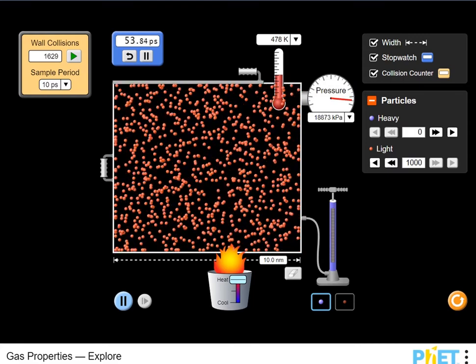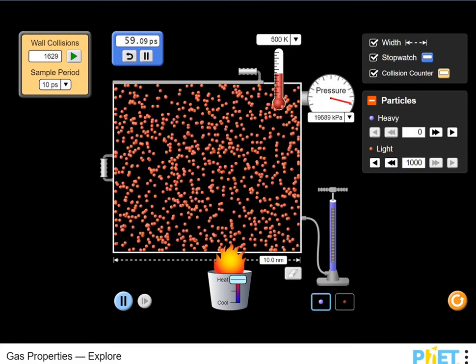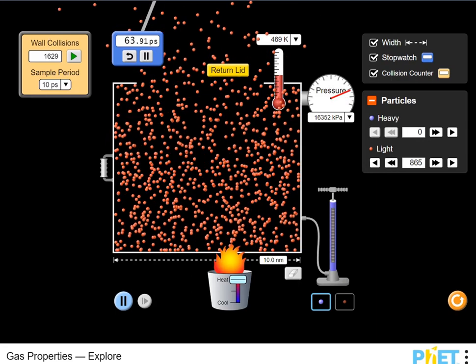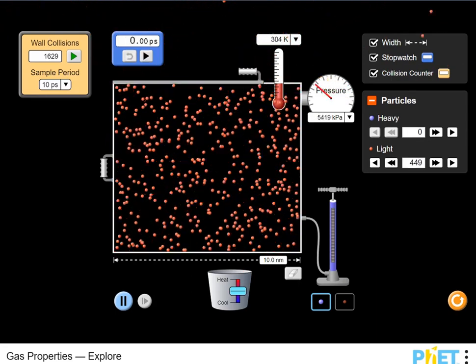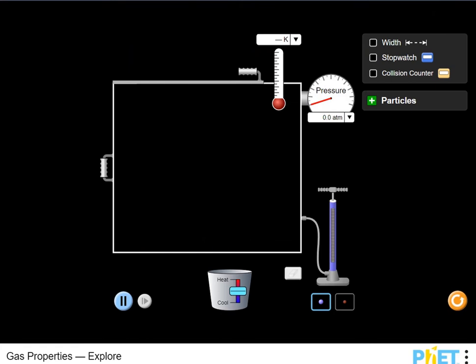Adjust the temperature by increasing or decreasing the heat in the simulation. Adjusting the pressure will also affect the simulation. You can observe the pressure gauge and temperature gauges under different scenarios to see what will happen and what the effects are.